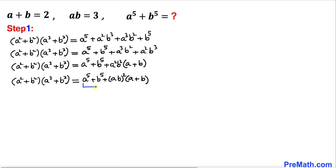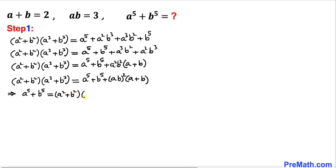Now let's isolate a power 5 plus b power 5 by moving the other term to the other side. Therefore we can write: a power 5 plus b power 5 equals (a squared plus b squared) times (a cubed plus b cubed) minus (ab) squared times (a plus b). Let's call this equation number 1.